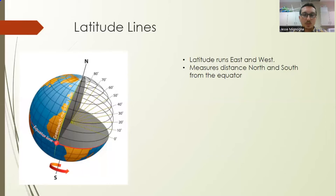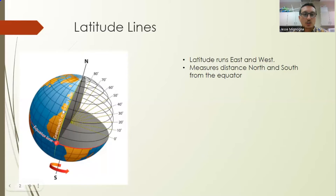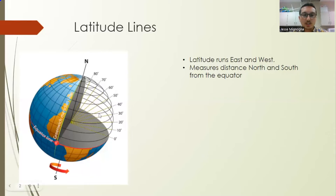If you're watching this video, you're studying for the FAA Part 107 exam, which is done by the United States FAA. They're concerned with the United States, so just pay attention to the Northern Hemisphere. All of the United States is in the Northern Hemisphere, including Hawaii. As you go north, the numbers of latitude are getting bigger.